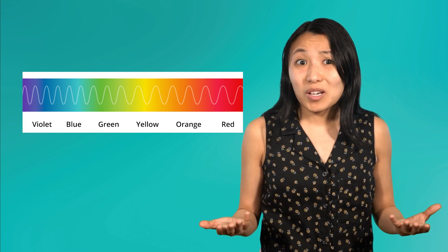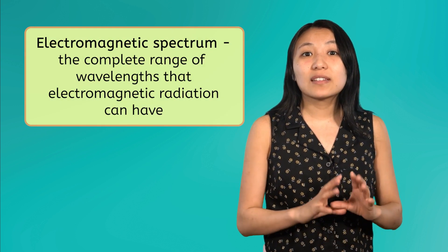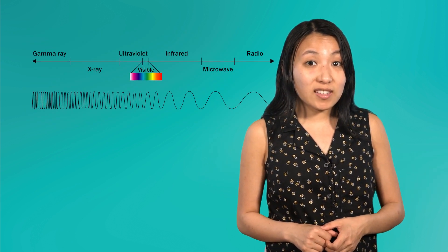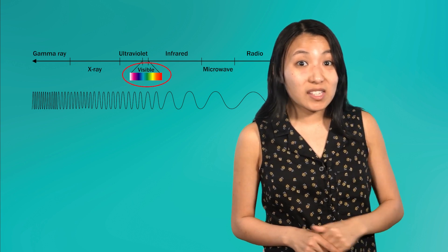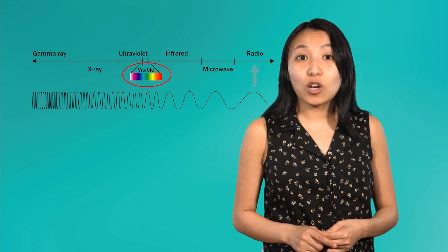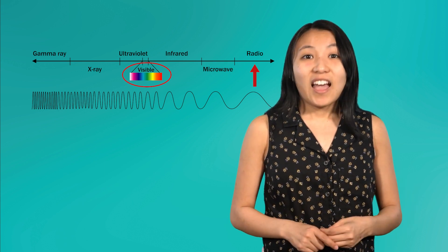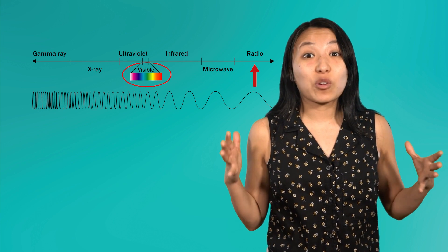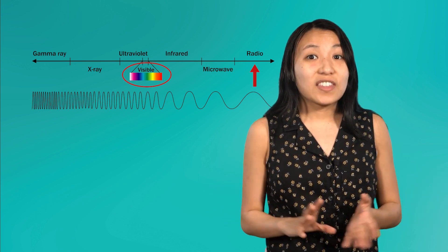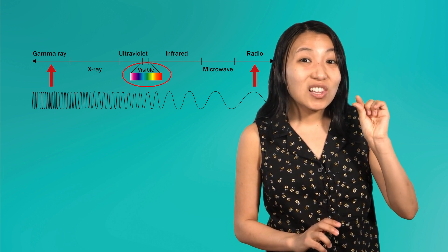So what about the wavelengths we can't see with our eyes? The complete range of wavelengths that electromagnetic radiation can have is called the electromagnetic spectrum. As you can see, the range of visible light wavelengths is just a tiny sliver of the spectrum. The longest electromagnetic waves are radio waves, which we use to transmit radio broadcasts and cell phone service. These can have a wavelength as long as entire buildings. On the other end of the spectrum are gamma rays, with a wavelength as short as a single atom.